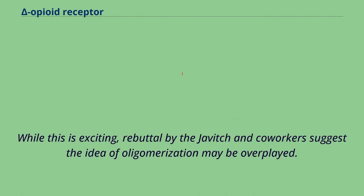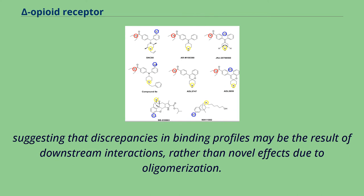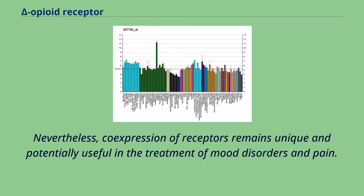While this is exciting, rebuttal by Javitch and co-workers suggests the idea of oligomerization may be overplayed. Relying on FRET, Javitch and co-workers showed that FRET signals were more characteristic of random proximity between receptors, rather than actual bond formation between receptors, suggesting that discrepancies in binding profiles may be the result of downstream interactions rather than novel effects due to oligomerization. Nevertheless, co-expression of receptors remains unique and potentially useful in the treatment of mood disorders and pain.